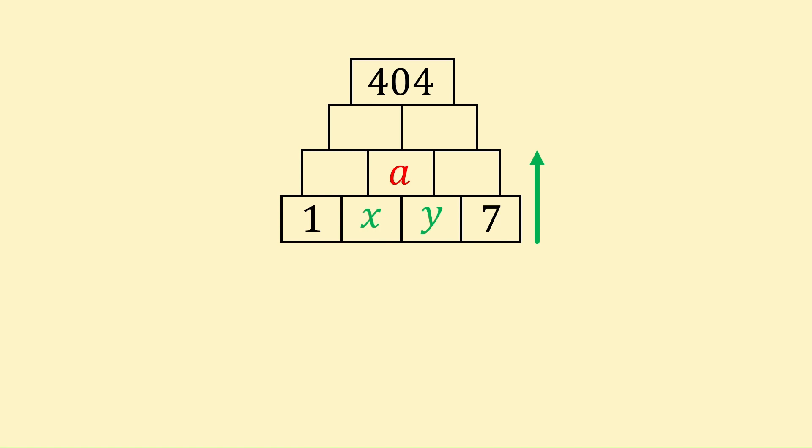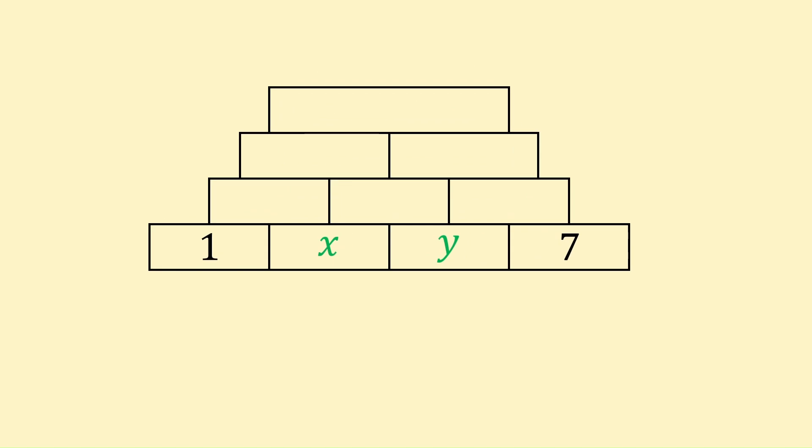To do this, let's put our 404 and A to the side and focus on the pyramid's structure. The block just above 1 and x becomes 1 plus x, as it is the sum of the two. Likewise, the block just above y and 7 becomes y plus 7. And the middle block on this row is the sum of x plus y.